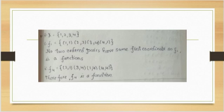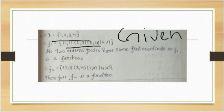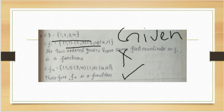We should just see whether it is a function or not. First, always write the given information. So the first one — f1 — is not a function. The second one, f4 = {(2,1), (3,4), (1,4), (4,4)}. It is a function. Why? Because two ordered pairs have the same first coordinate. So f4 is a function — that is the definition.